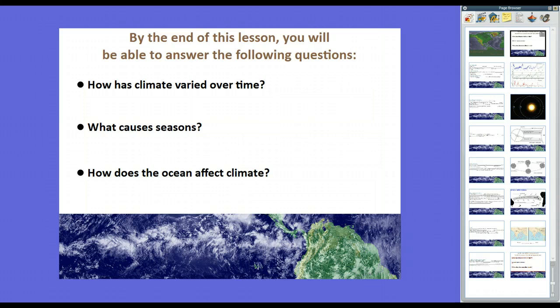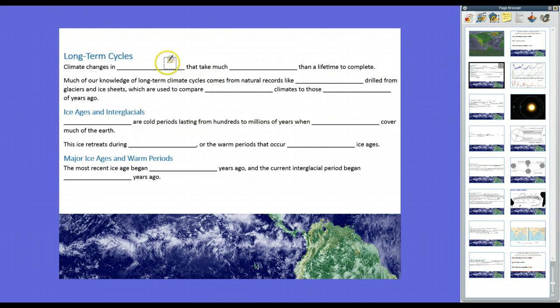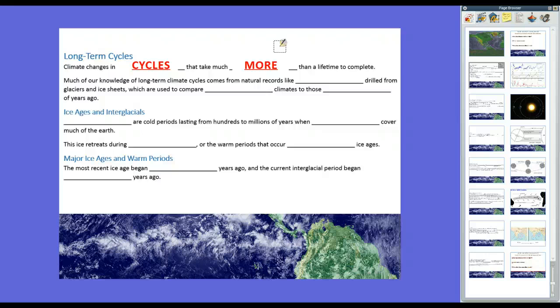Remember, weather is very short term. It's like here, right now, and in the immediate future. But climate is precipitation, temperature, and other factors over time. And because climate changes in cycles that take much longer, much more than a lifetime to complete, oftentimes we can't really see what goes on with climate. And as you know, climate and climate change and global warming are debated oftentimes in the news.